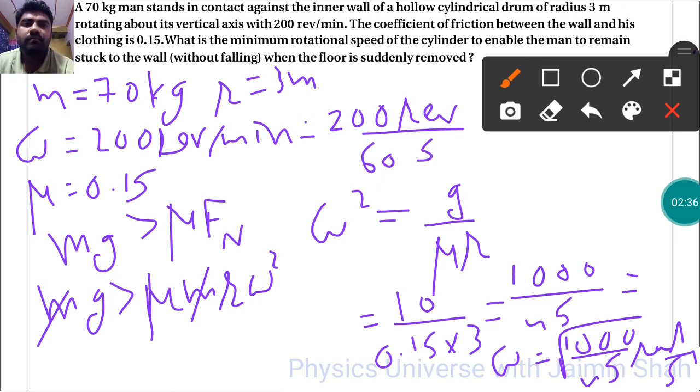So that is the minimum rotational speed of the cylinder to enable the man to remain stuck to the wall when the floor is suddenly removed.